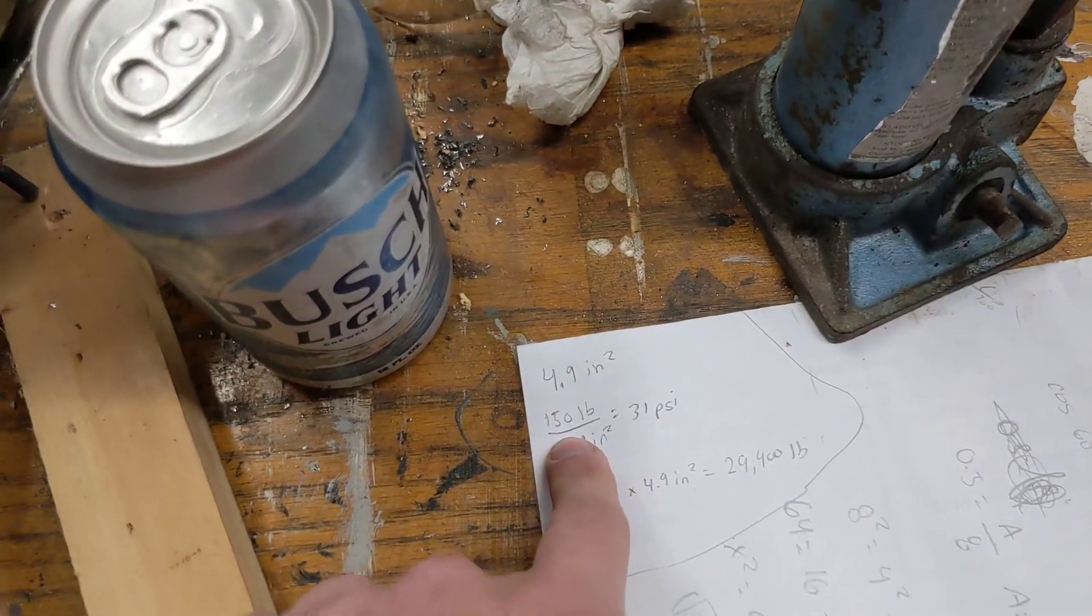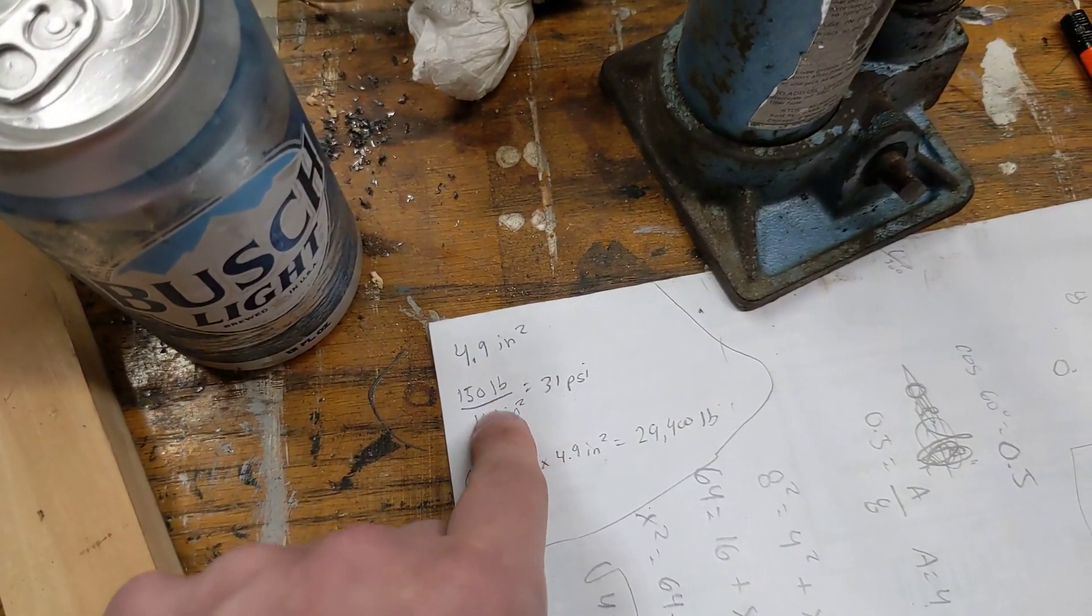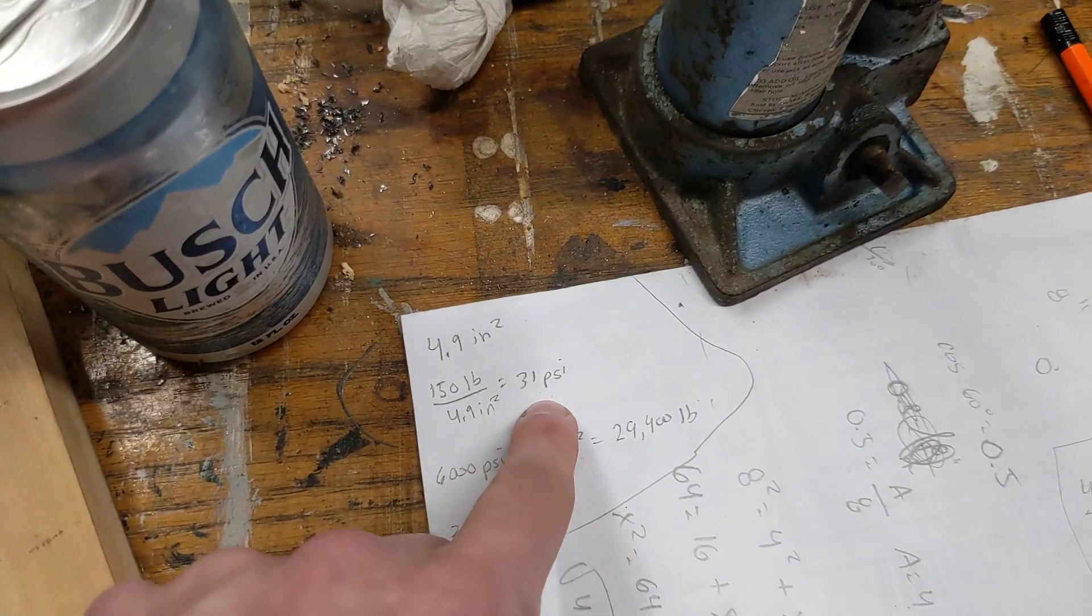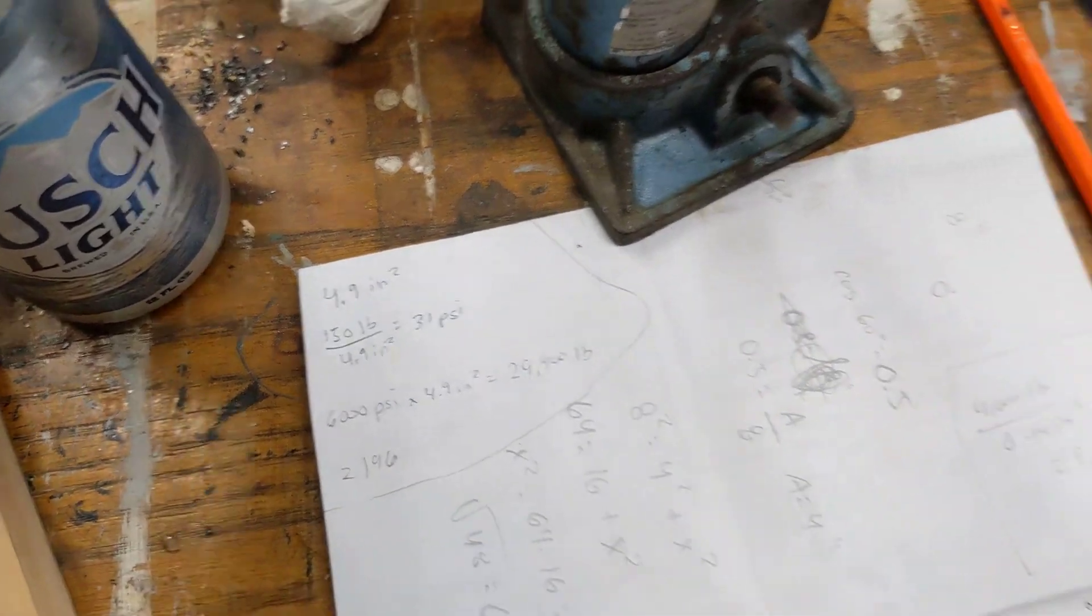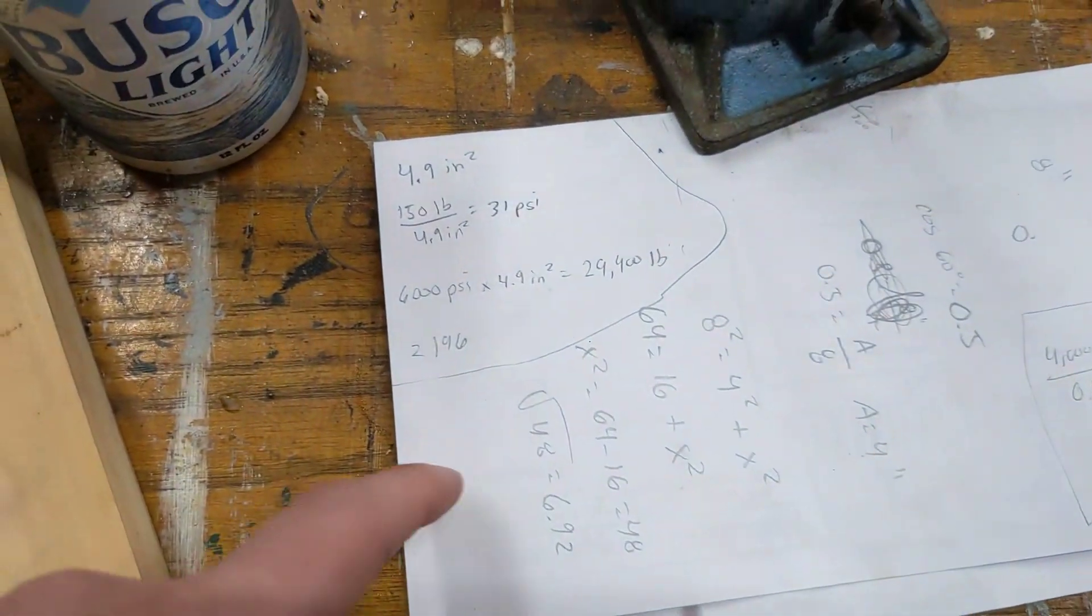The weight of my whole body weight, if I put it on there, is 150 pounds divided by 4.9 square inches gives you a pressure of 31 pounds per square inch. So, it didn't even take 31 psi to crush these cans.